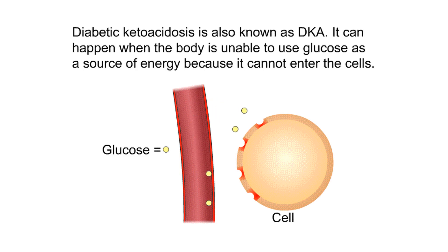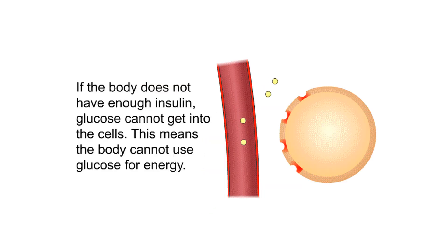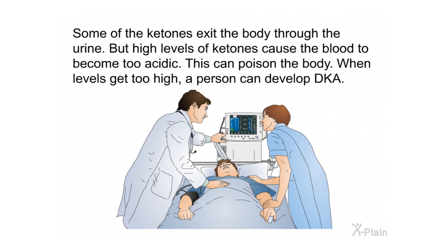Diabetic ketoacidosis, also known as DKA, can happen when the body is unable to use glucose as a source of energy because it cannot enter the cells. Insulin lets glucose, or sugar, into the body's cells. Glucose is the main source of energy for the cells. If the body does not have enough insulin, glucose cannot get into the cells, meaning the body cannot use glucose for energy and instead uses fat. When fat is used for energy, ketones are released into the blood.